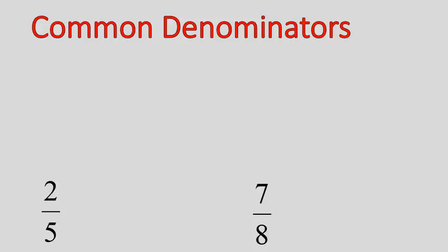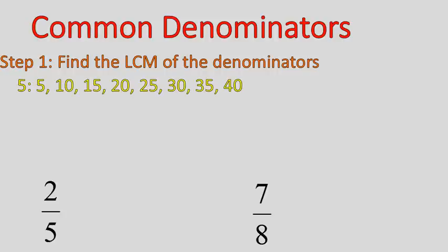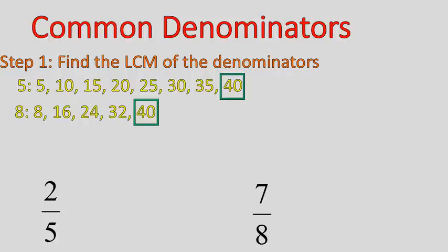When you're trying to find common denominators, you are finding the least common multiple of the denominators. The denominator is the number on the bottom of the fraction. So what we're trying to do is find the least common multiple of 5 and 8. List the multiples of 5, then list the multiples of 8 — 8 times 1, 8 times 2, 8 times 3 — and stop when you come to a common multiple. In this case, 40. So 40 is the common multiple of 5 and 8.